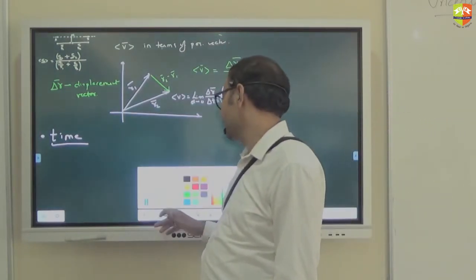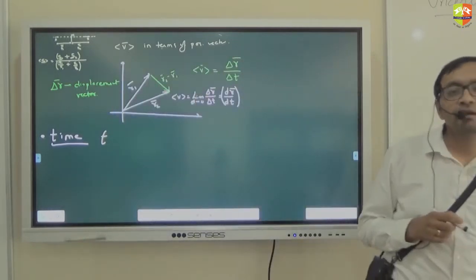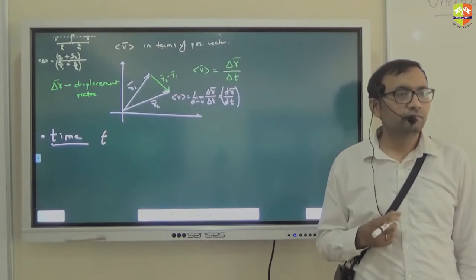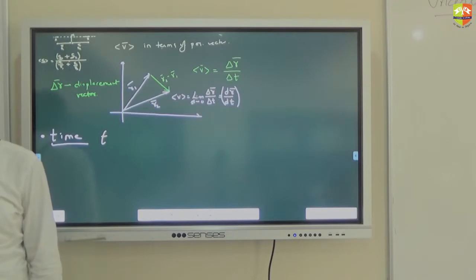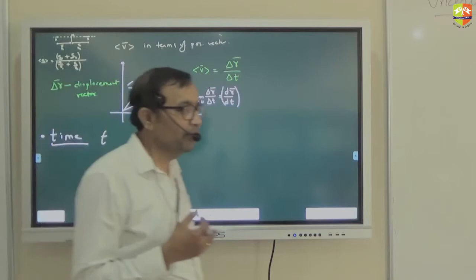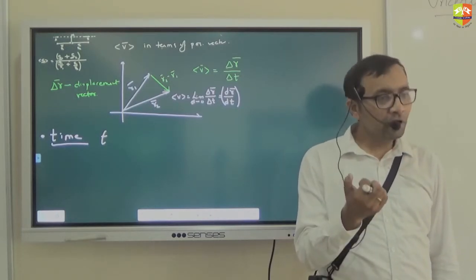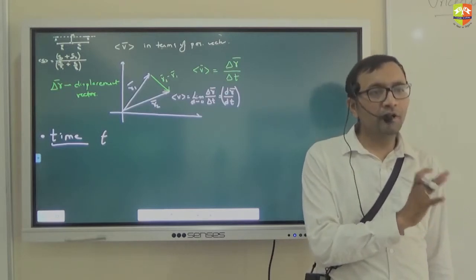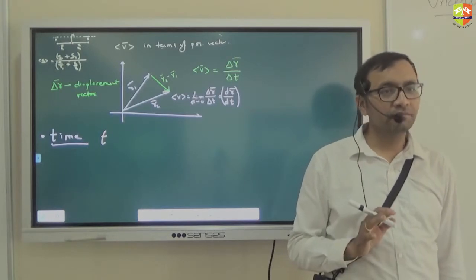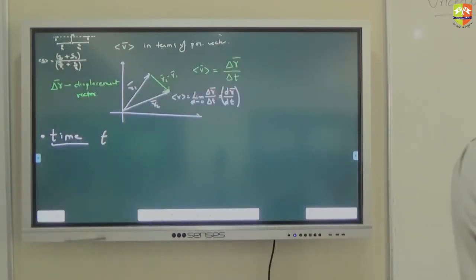Time is represented by a small t. What can I say about time — can it be negative? When I say t equals zero, what does it mean? It means from where you started measuring your activity. Suppose I have a stopwatch and I started measuring some activity — that is my t equals zero. Before I started my stopwatch, the universe existed. So what is the time before t equals zero? It was negative. Time can be negative depending on where you place your zero.